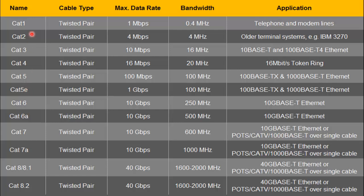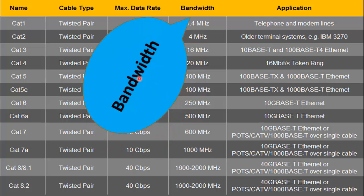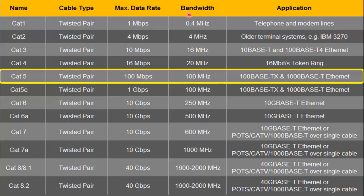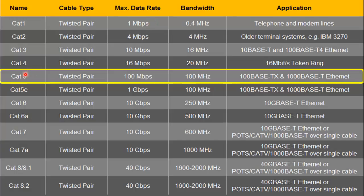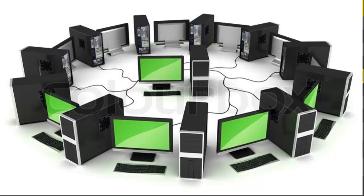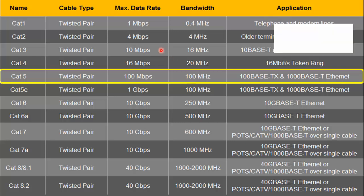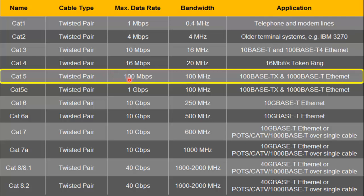All these cables are categorized based on the supported data rate and the supported bandwidth. What is the difference between the data rate and the bandwidth? If we have only one user whose Ethernet speed is very high, he can use a cable that supports a high data rate and the bandwidth requirement is not as high. But if there are multiple users in the building using high-speed Internet, then obviously both the data rate requirement and the bandwidth requirement are also high. Based on these requirements, different categories of LAN cable are available.